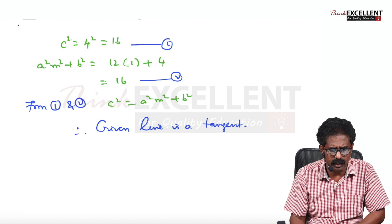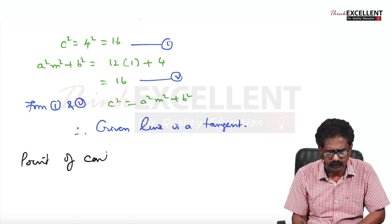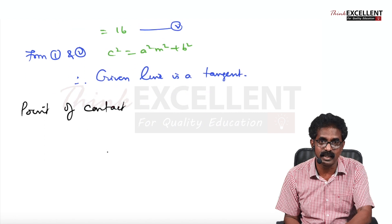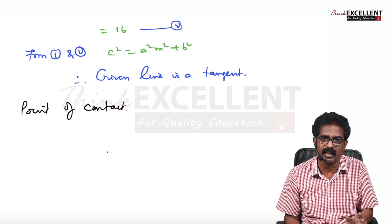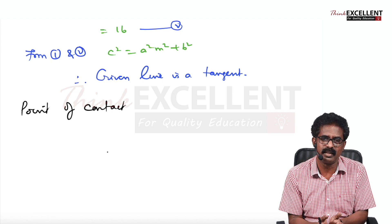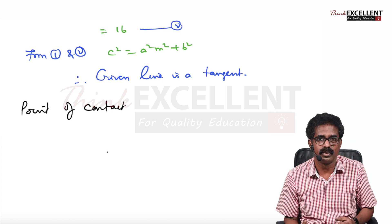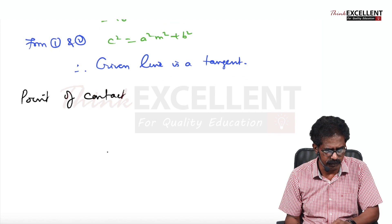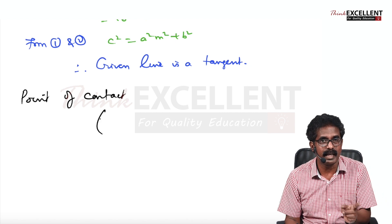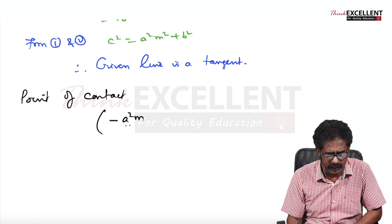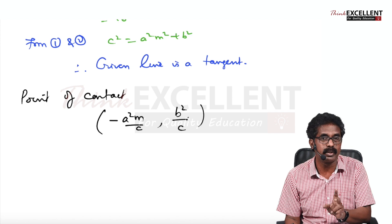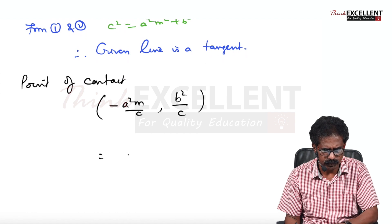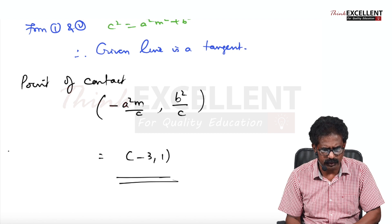Now find the point of contact. The formula for ellipse is (-A²m/c, B²/c). Learn the formula — without it there is no use. All values are known: A² = 12, m = 1, c = 4, B² = 4. Substitute and you will get (-3, 1). The calculation part you can do — I am leaving it to you.